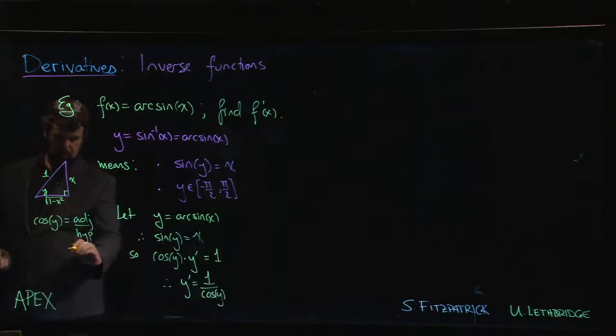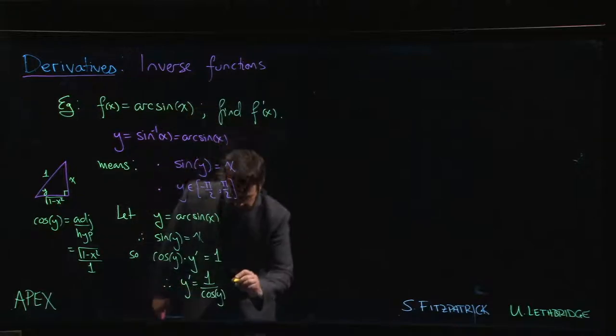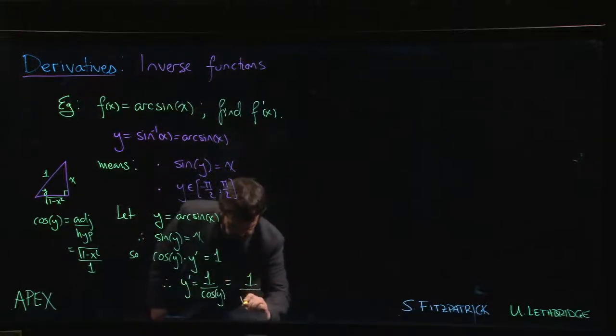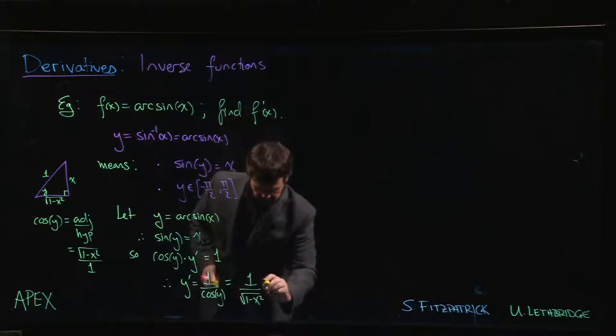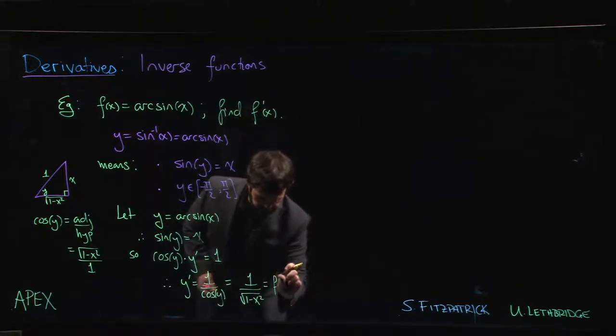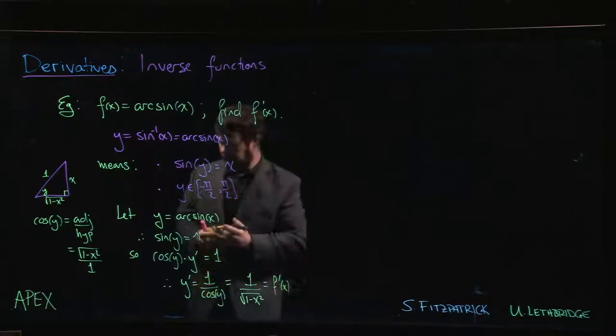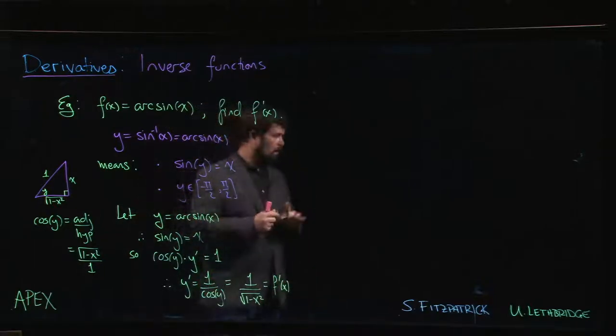So the adjacent side is one minus x squared, hypotenuse is one, so we just get one minus x squared. So that's what we put in over here: square root of one minus x squared. And that is the derivative of the arc sine function.